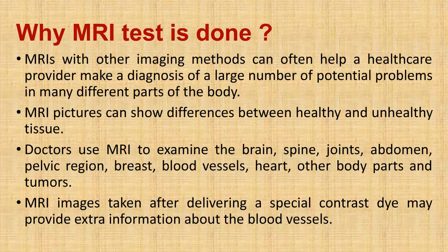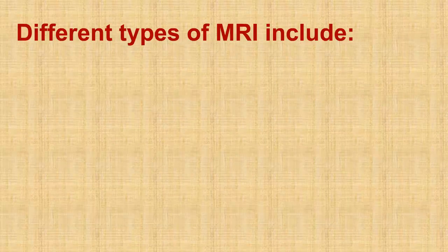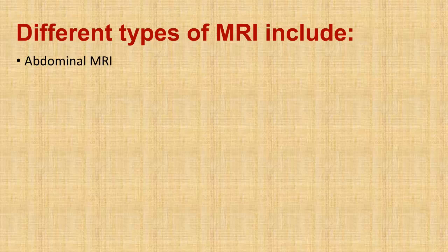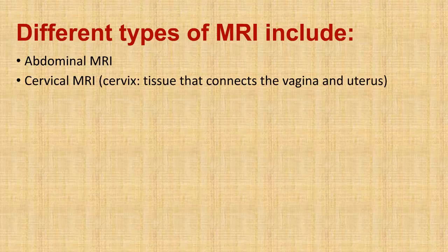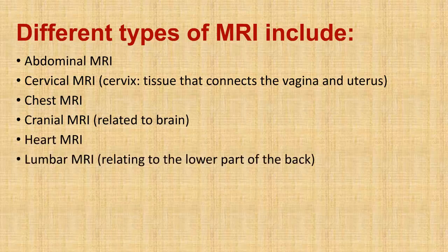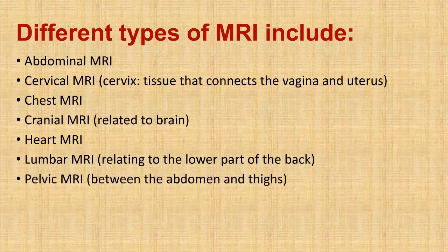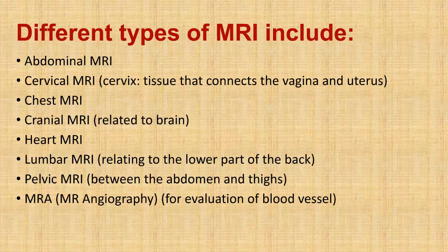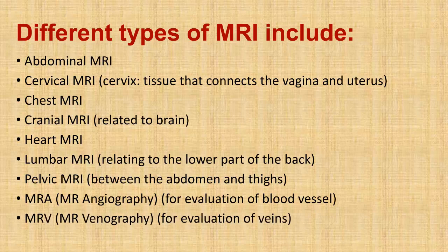Different types of MRI include: Abdominal MRI, Cervical MRI (cervix: tissue that connects the vagina and uterus), Chest MRI, Cranial MRI (relating to the brain), Heart MRI, Lumbar MRI (relating to the lower part of the back), Pelvic MRI (between the abdomen and thighs), MRA (MR Angiography) for evaluation of blood vessels, and MRA Venography for evaluation of veins.